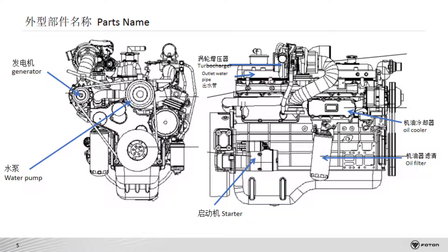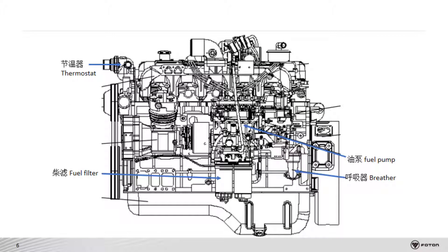Let's have a look at the sub-components and composition of the engine: belt driving generator and water pump by crankshaft, DC starter, turbocharger and oil cooler, oil filter, fuel filter, fuel pump, and engine breather.